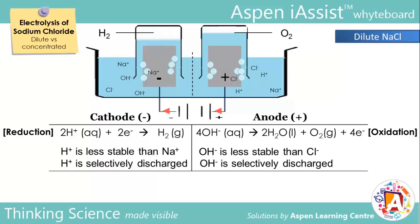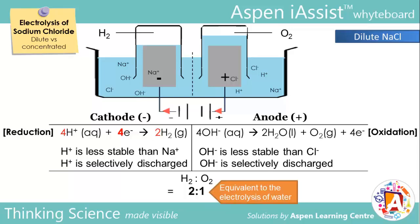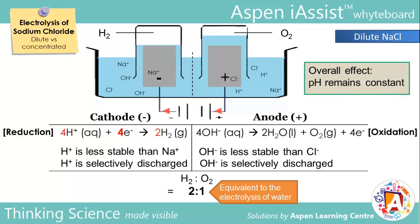Observe that for every four electrons, two volumes of hydrogen gas and one volume of oxygen are produced. Hence, electrolysis of dilute NaCl is equivalent to the electrolysis of water. In addition, as H⁺ ions are used up at the cathode, the relative concentration of OH⁻ around the cathode increases, resulting in an increase in pH. Vice versa, pH decreases at the anode as OH⁻ ions are used and the relative concentration of H⁺ ions increases. The combined effect results in the overall pH of the solution being unchanged.